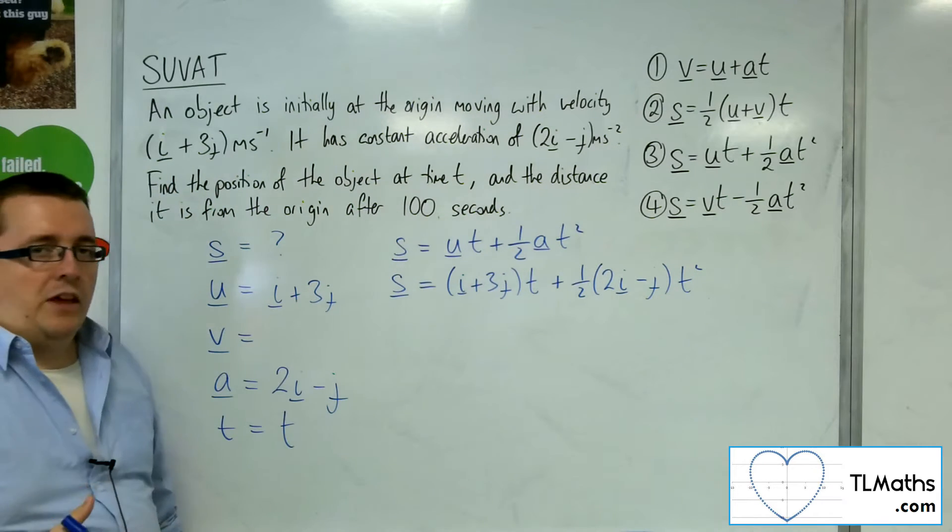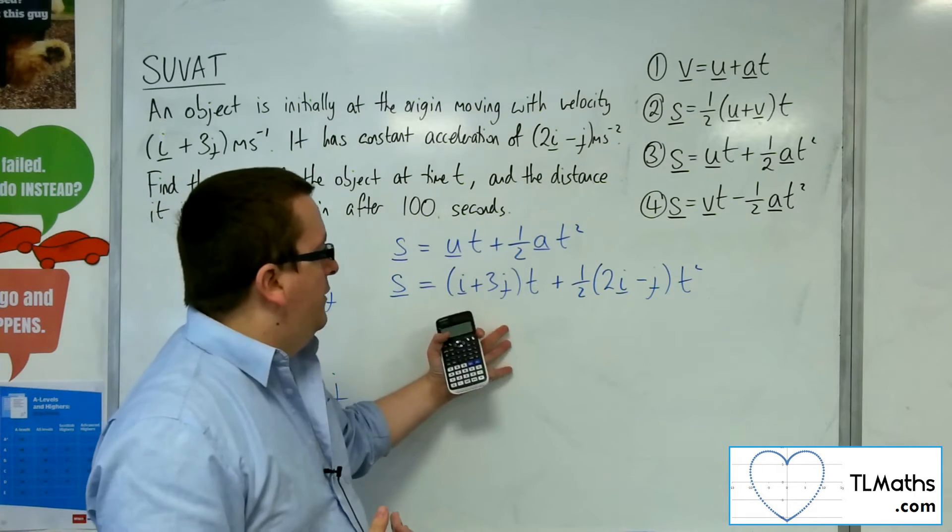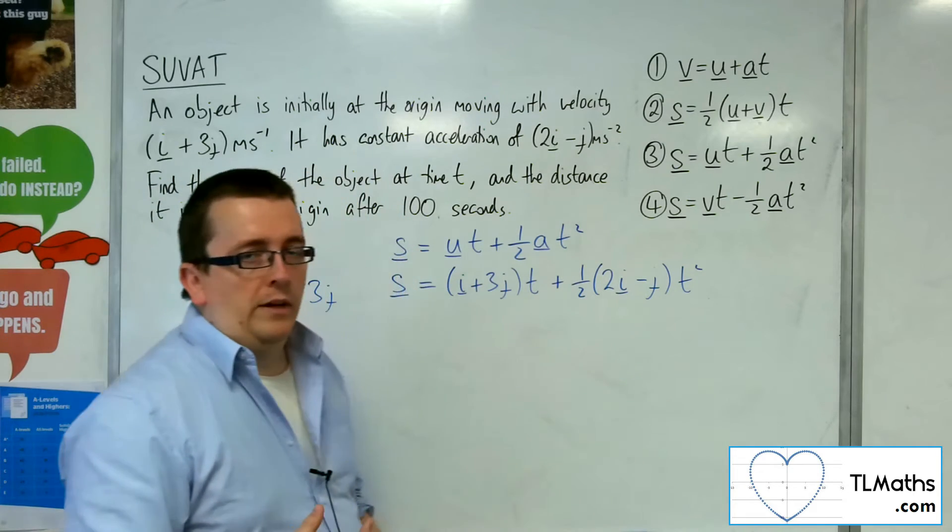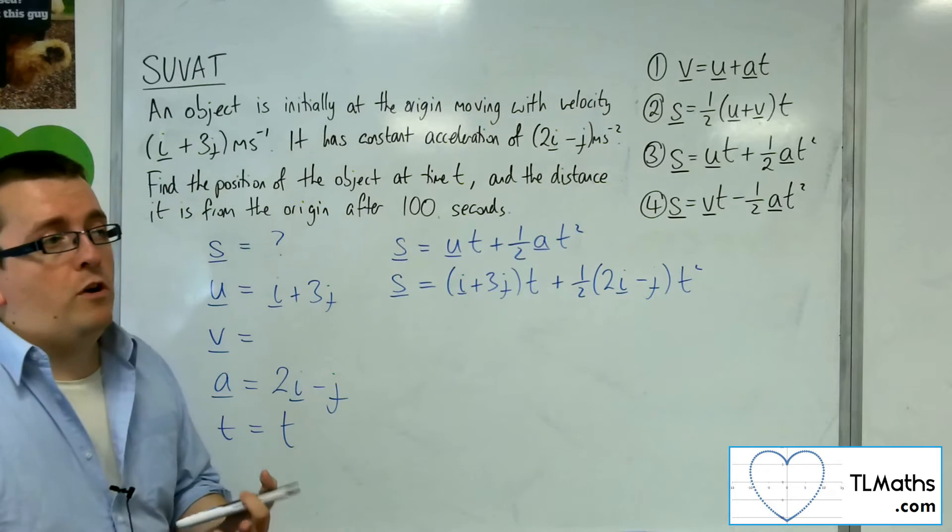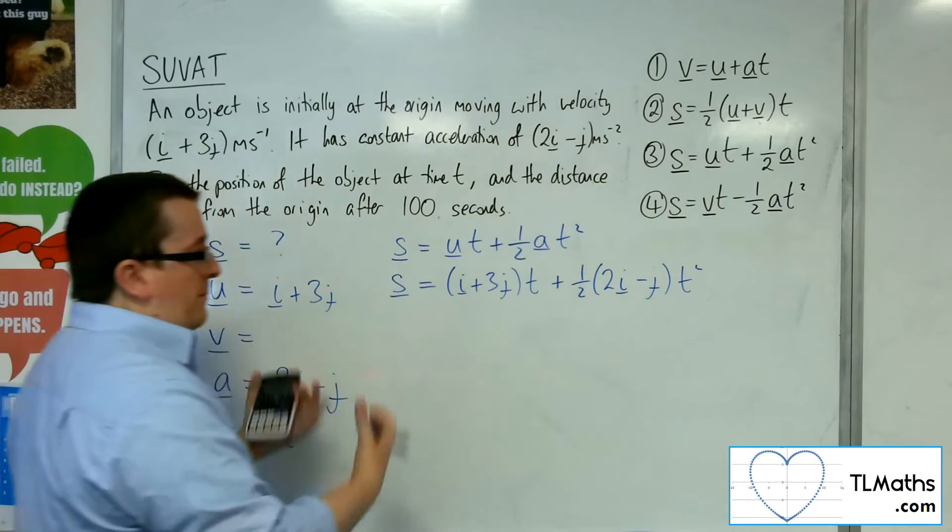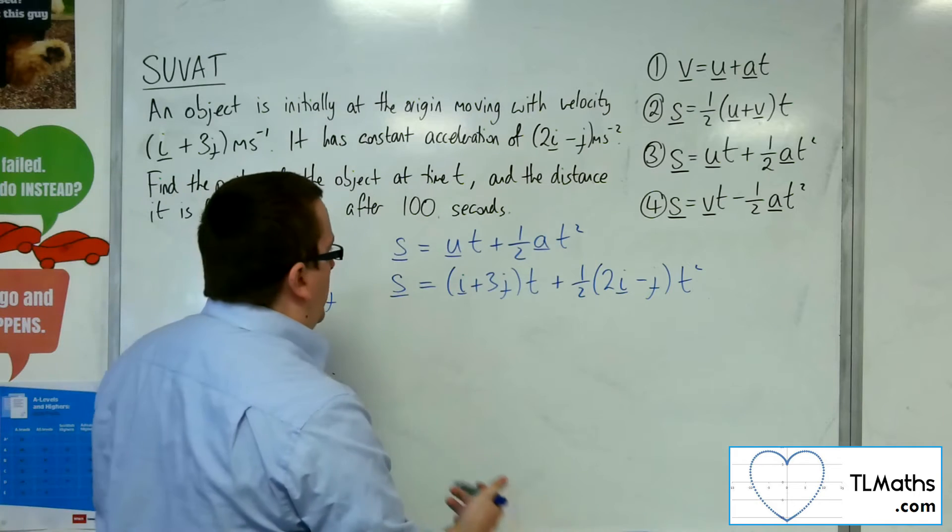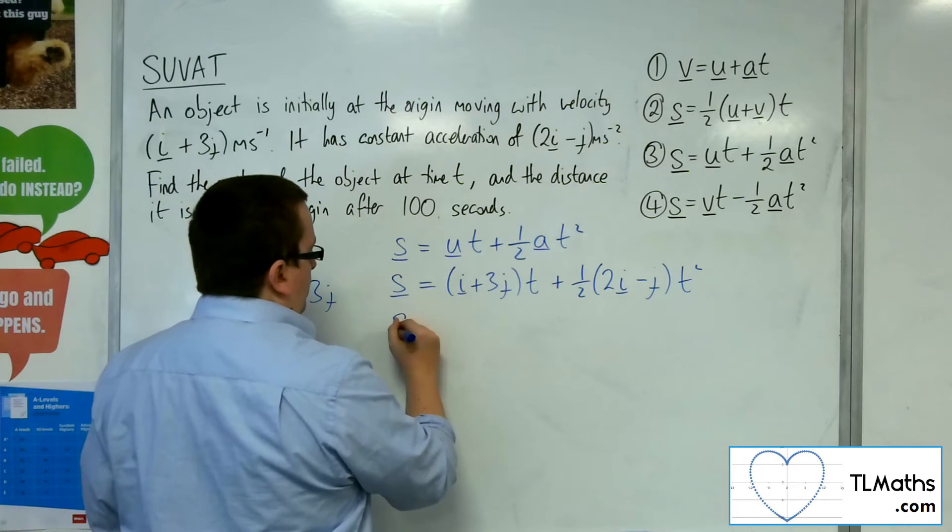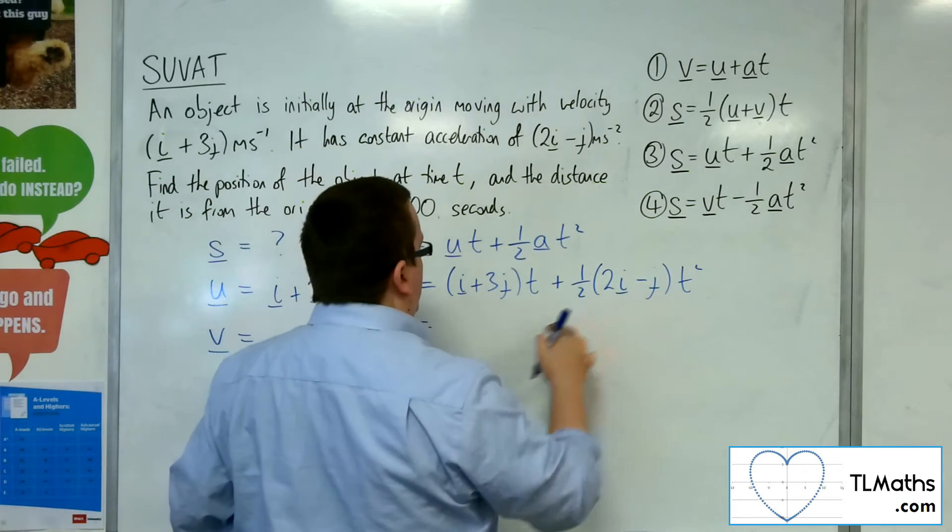Now, the thing about this is that we've got a bit here with i's and j's and a bit here with i's and j's. And what we prefer to do is try to write all the i's and then all the j's. So something i plus something j. So, I'm going to expand this out.